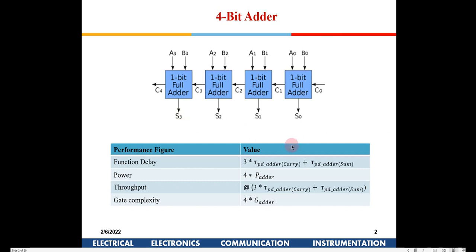S3 denotes the most significant sum bit. The 4-bit inputs are A0, A1, A2, A3 and B0, B1, B2, B3, giving sum outputs S0, S1, S2, S3. Gate complexity is being compared with the pipeline adder just as a figure of merit. Throughput is one divided by the functional delay — meaning one valid data output will appear once per functional delay period.